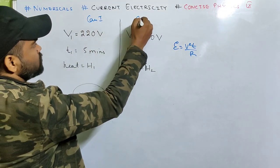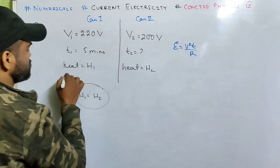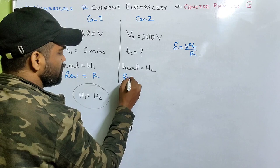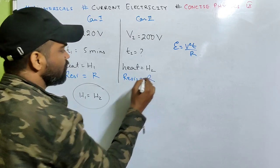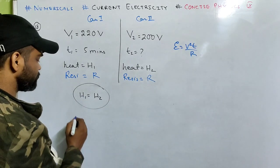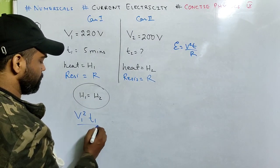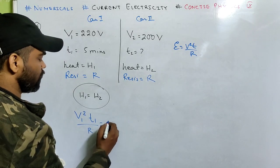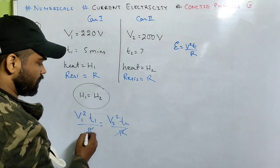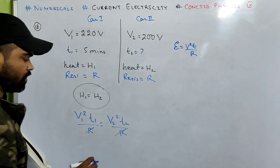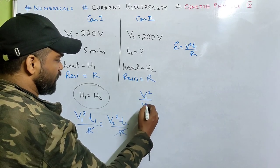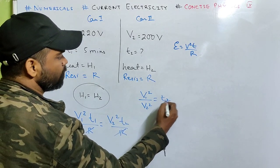Energy is V squared T by R. In both cases, resistance will be the same because it's the same kettle. So H1 will be V1 squared T1 by R and H2 will be V2 squared T2 by R. R cancels, and we get V1 squared by V2 squared equals T2 by T1.